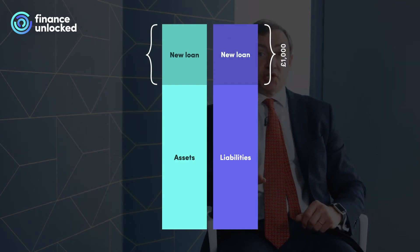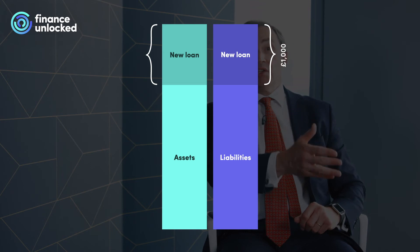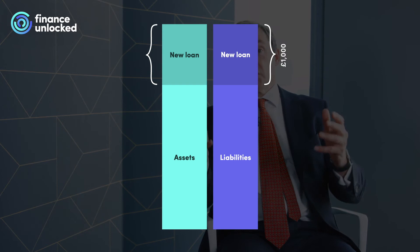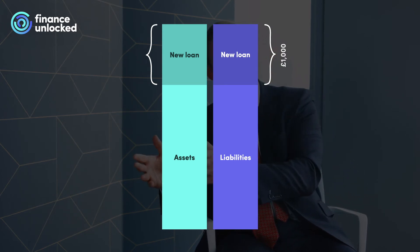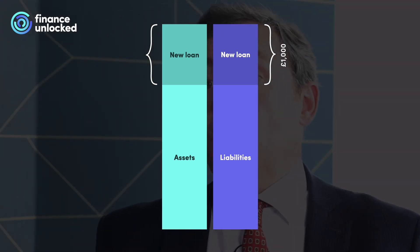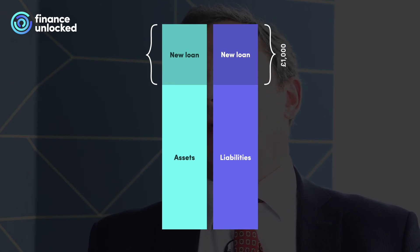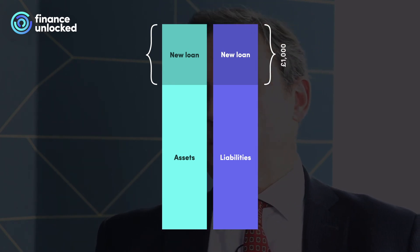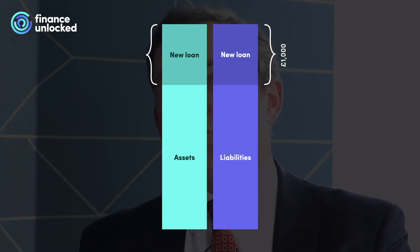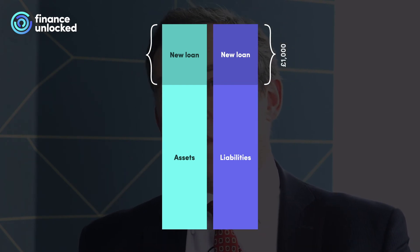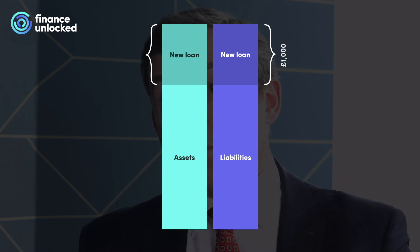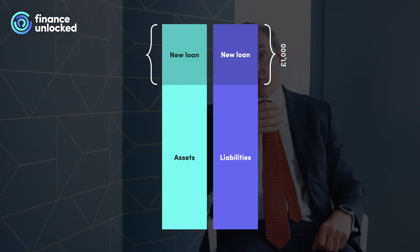The bank's balance sheet has therefore grown on each side by £1,000, and the supply of money in society has increased by that £1,000. To re-express this more technically, new broad money has been created in the form of bank deposits without there being any change in the amount of base money in the economy, because no new paper money has been printed, and nor have any extra central bank reserves been created.